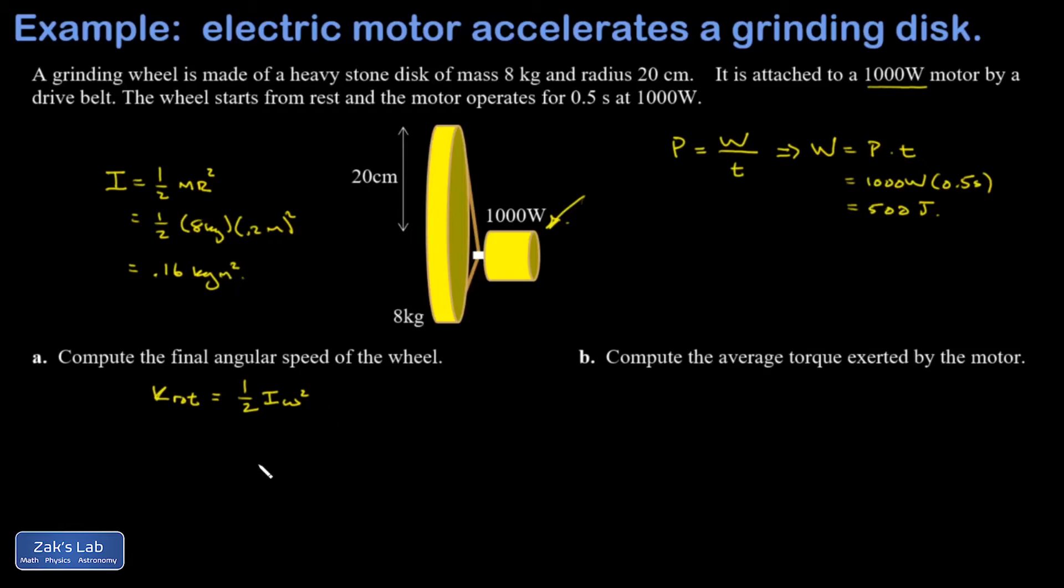All right, so back to what we were doing. We just found out that 500 joules of energy was pumped into the rotation of this object. And so I can write 500 joules of rotational kinetic energy equals one half times the moment of inertia, which is 0.16 kilogram meters squared, times omega squared. And I've got my answer. So I'm just going to crunch this in my calculator real quick, and I get 79.1 radians per second for the final angular speed.